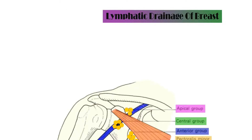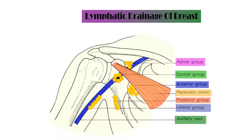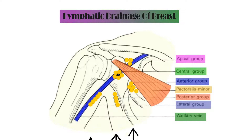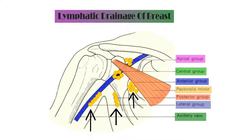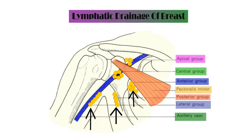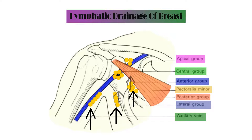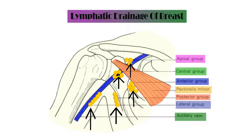Now let's talk about Berg's levels of axillary lymph nodes. Level 1 is lateral and below the pectoralis minor muscle. Three groups of lymph nodes are situated at this level: anterior, lateral, and posterior — remembered easily as PAL or LAP. Level 2 is the central group, lying beneath the pectoralis minor muscle. Level 3 is above and medial to the pectoralis minor muscle, called the apical group of lymph nodes.